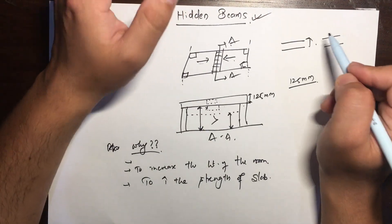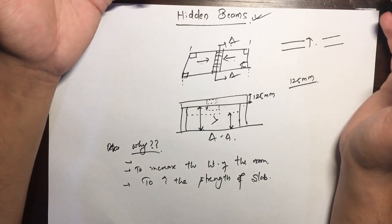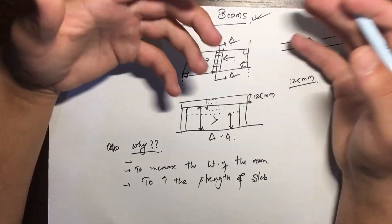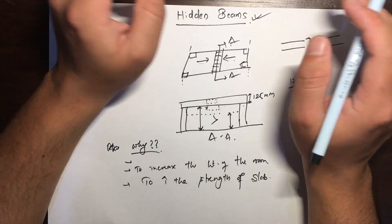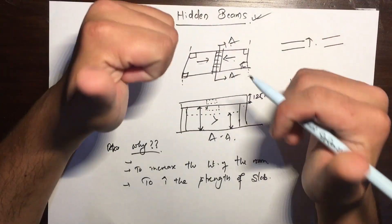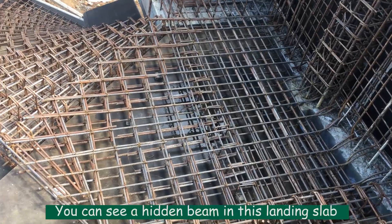So this is the definition of the hidden beam and these are the conditions when we require hidden beams. Hope this video was helpful. Thank you for watching and take care.